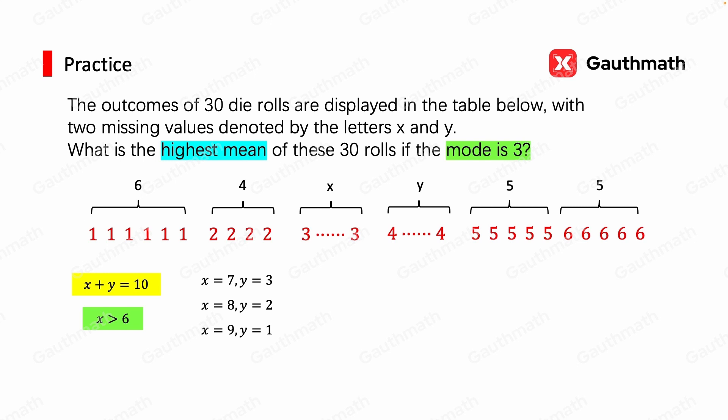But the question is asking for the highest possible mean. And that means we want as many 4s as possible as opposed to 3s. And so it has to be the case where we have x equals 7 and y equals 3. That means we have seven 3s and three 4s.